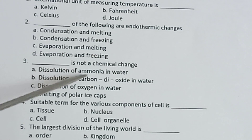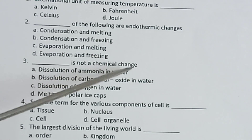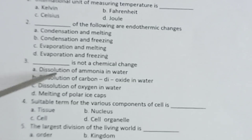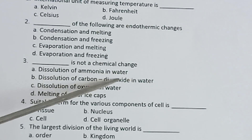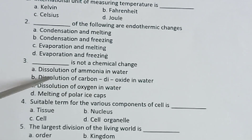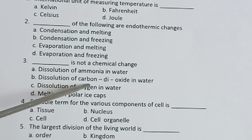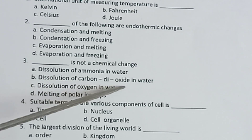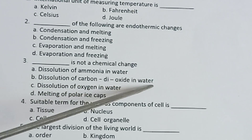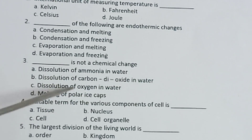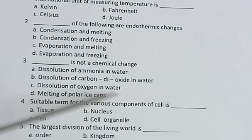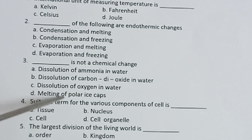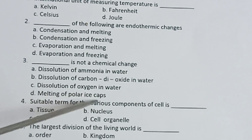Third one: Dash is not a chemical change. Options: dissolution of ammonia in water, dissolution of carbon dioxide in water, dissolution of oxygen in water, melting of polar ice caps.